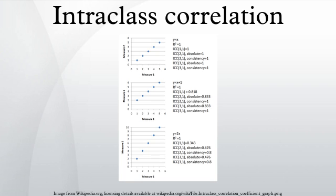This ICC can be generalized to allow for covariate effects, in which case the ICC is interpreted as capturing the within-class similarity of the covariate-adjusted data values. This expression can never be negative, and therefore in samples from a population with an ICC of zero, the ICCs in the samples will be higher than the ICC of the population. A number of different ICC statistics have been proposed, not all of which estimate the same population parameter, and there has been considerable debate about which ICC statistics are appropriate for a given use, since they may produce markedly different results for the same data.